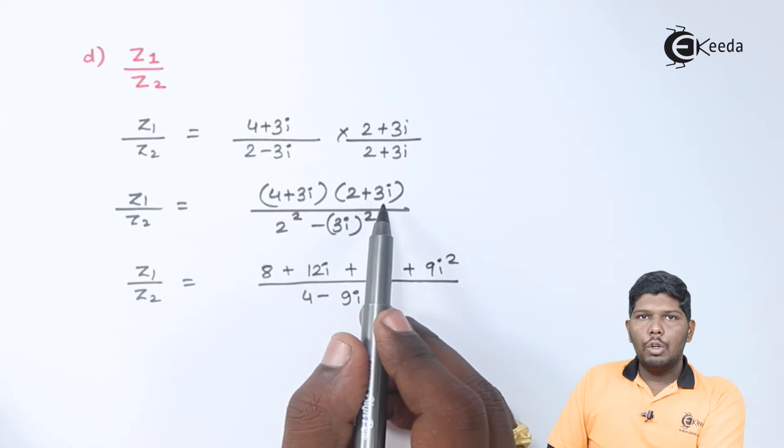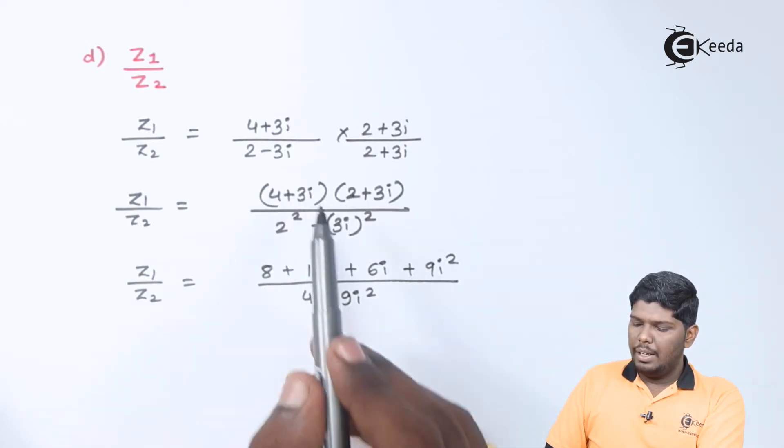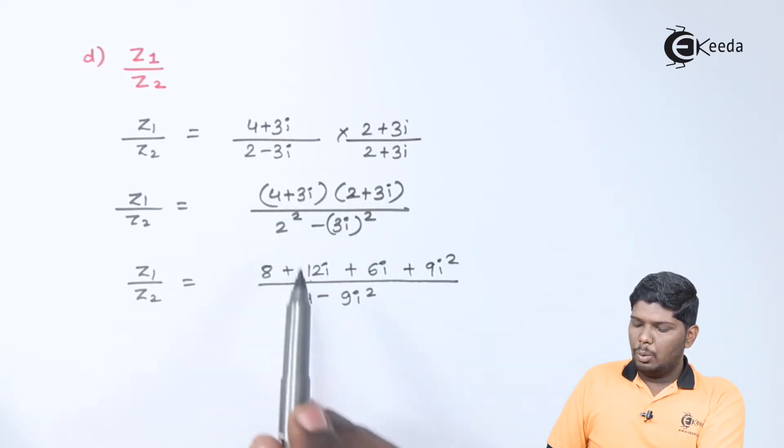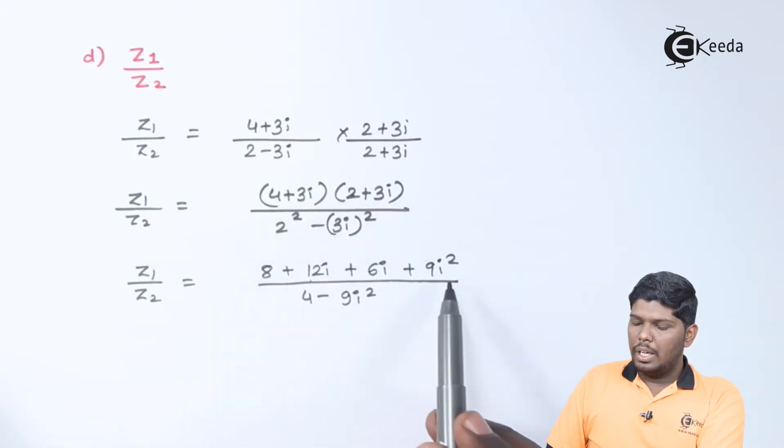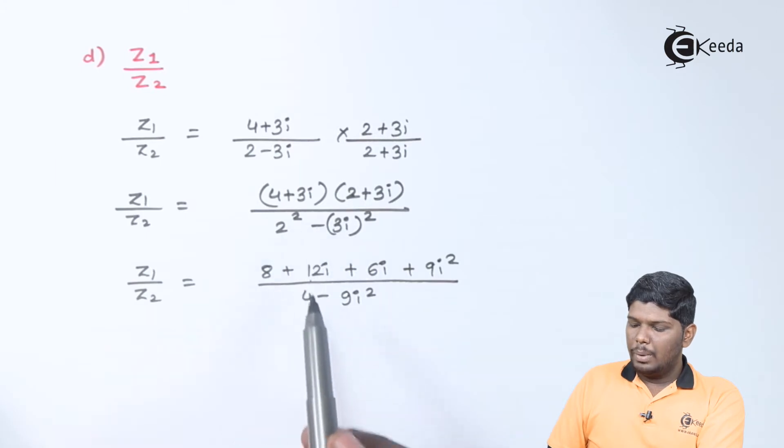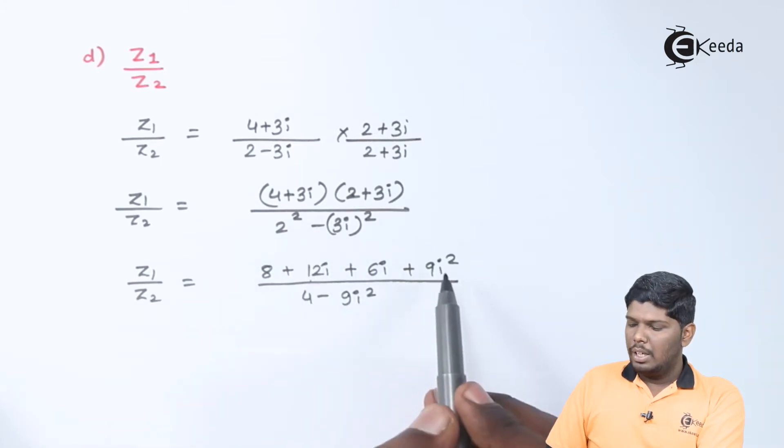On multiplication of numerator, we have 4 into 2 is 8 plus 4 into 3i is 12i plus 3i into 2 is 6i. Plus into plus will give you plus 3i into 3i is 9i square. And in the denominator, we have 4 minus 9i square.